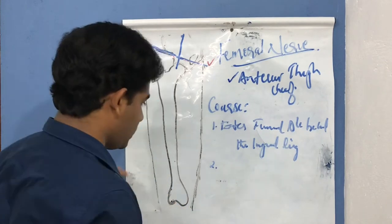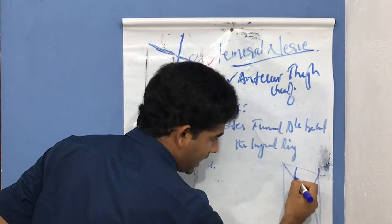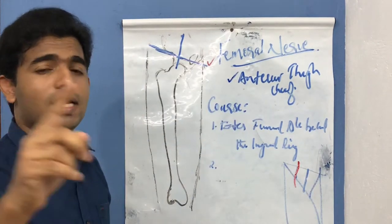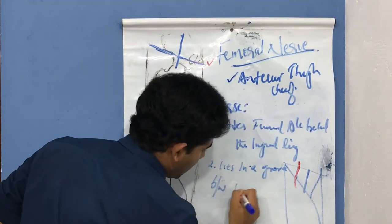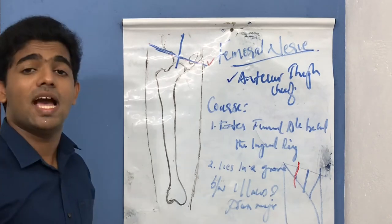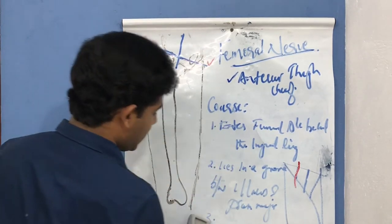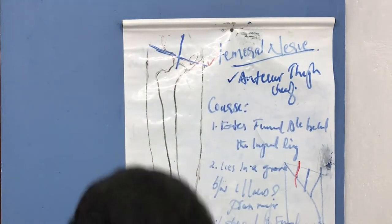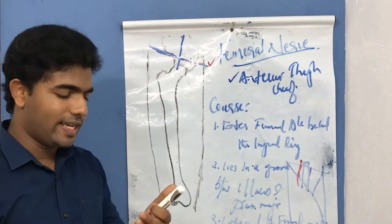In the femoral triangle, the femoral nerve lies in a groove between the iliacus muscle and the psoas major muscle. If you have the femoral triangle with the inguinal ligament, sartorius, and adductor longus, the femoral nerve lies in a groove between iliacus and psoas major. It also lies lateral to the femoral artery.